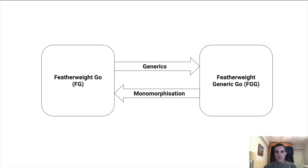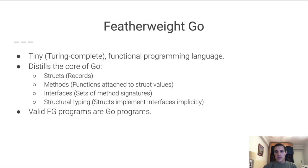What is Featherweight Go or FG? FG is a tiny Turing-complete language that distills the core elements of Go. It has structs, which are essentially records. It has methods, so functions that you can attach to structs. It has interfaces, which are just sets of method signatures. And it is structurally typed.